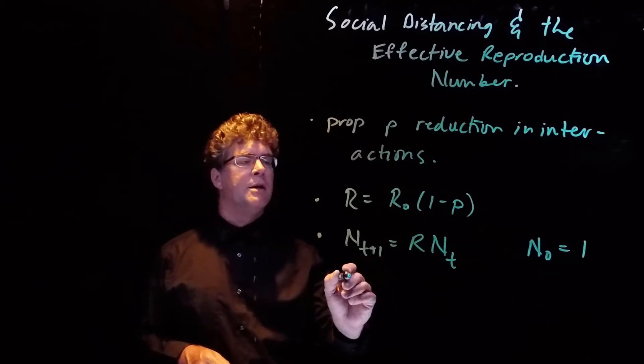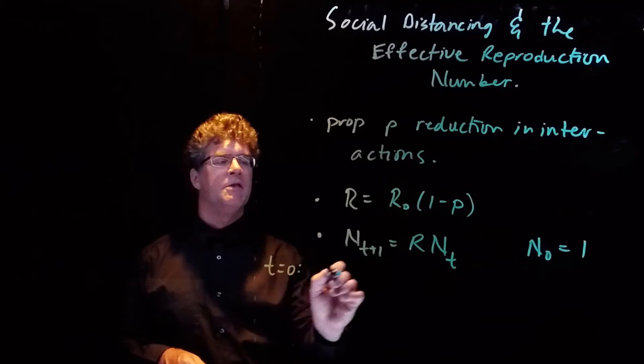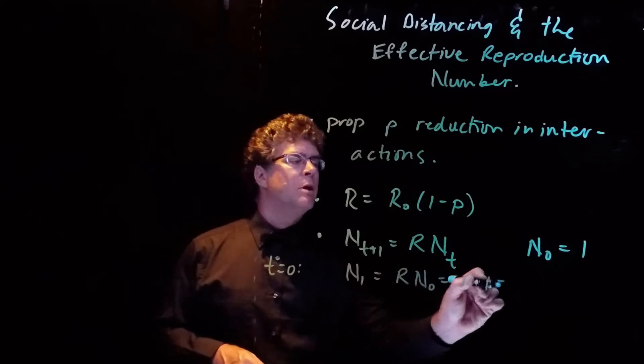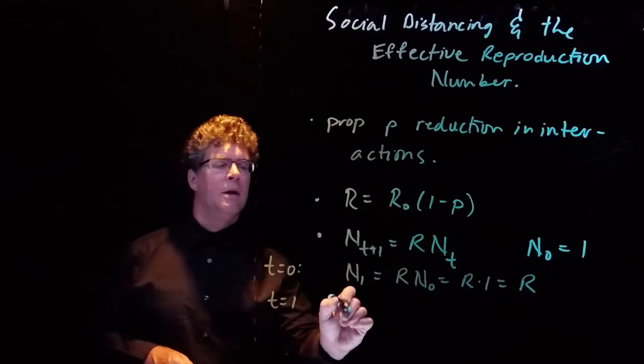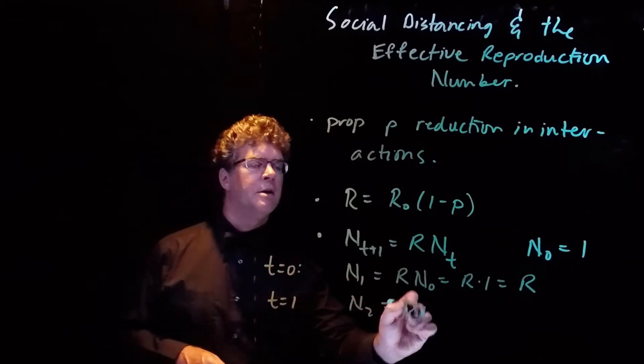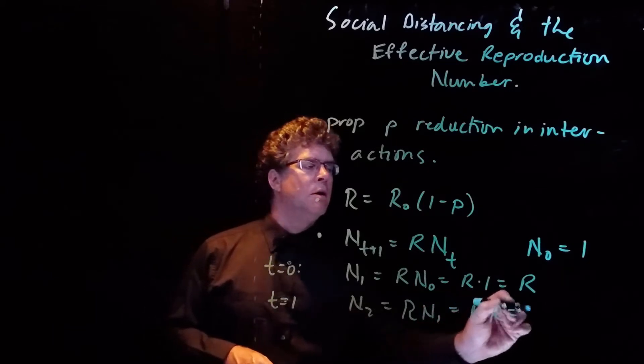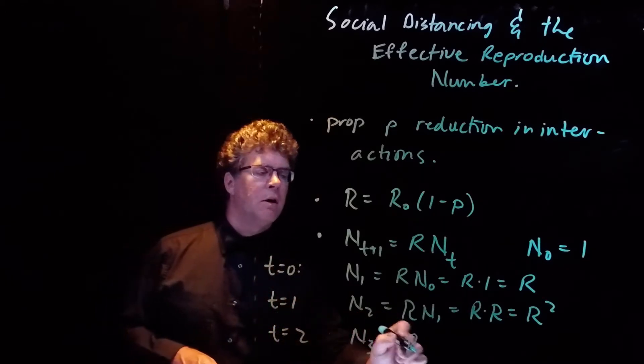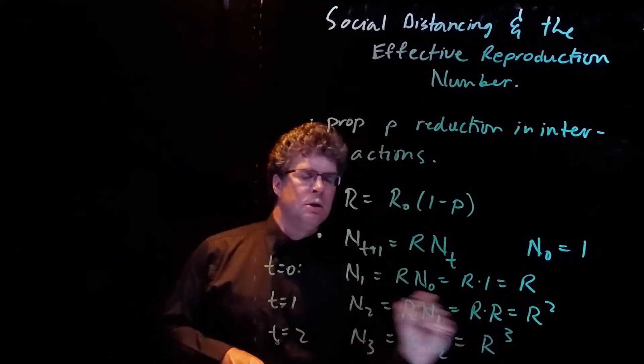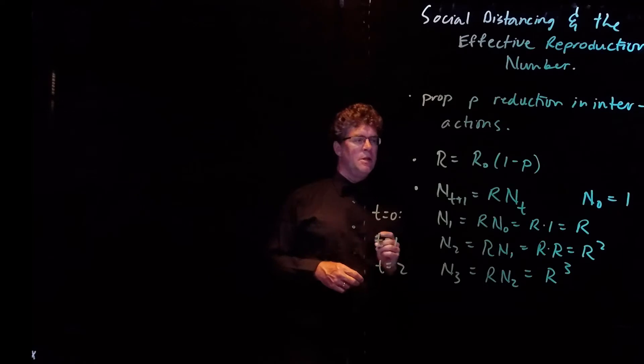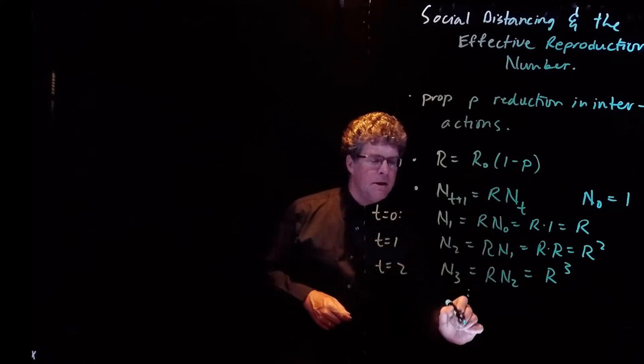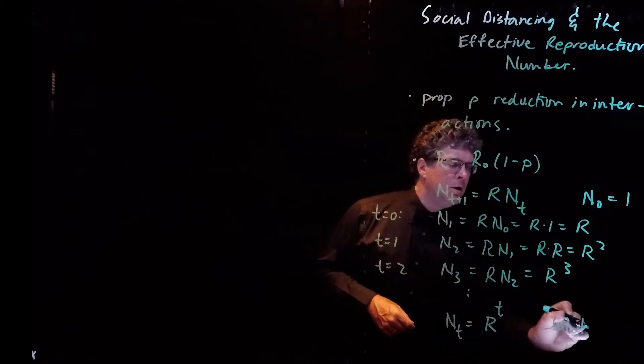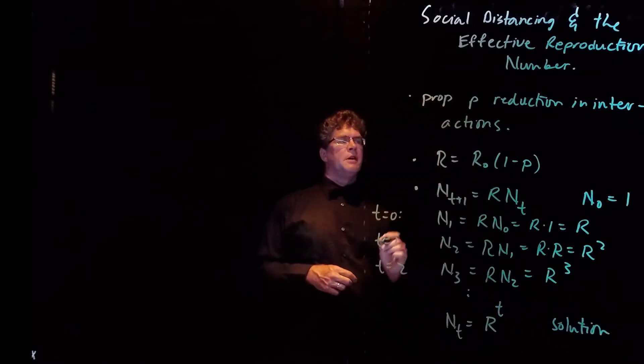And so if we write down the solution, we have t equals 0, N_1 will be R times N_0, which is R. t equals 1, N_2 is R times N_1, which is R squared. t equals 2, N_3 will be R times N_2, which is R cubed. And as we continue here, we see that N_t is equal to R to the tth power.